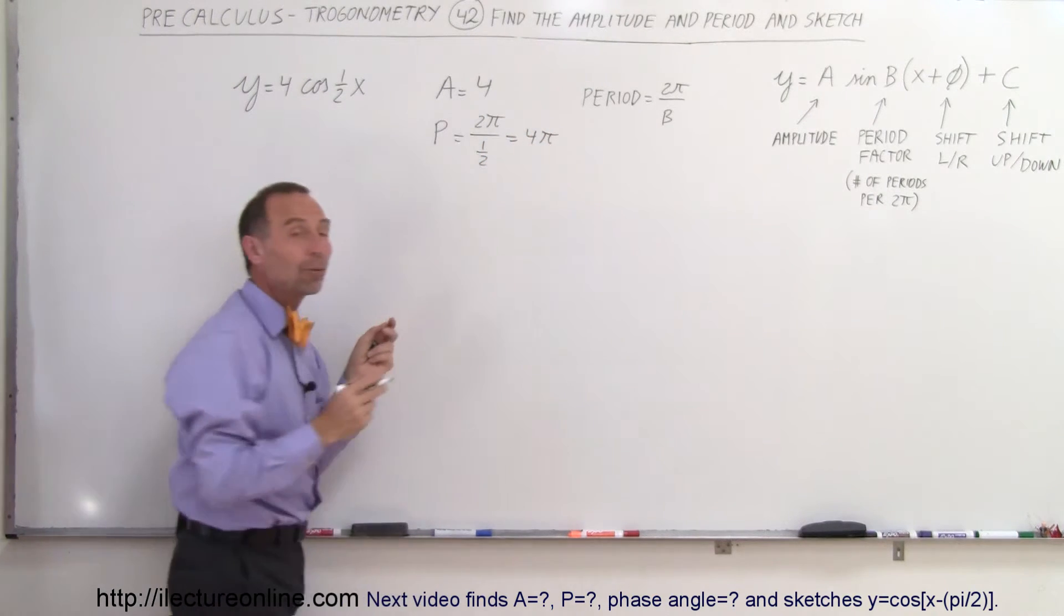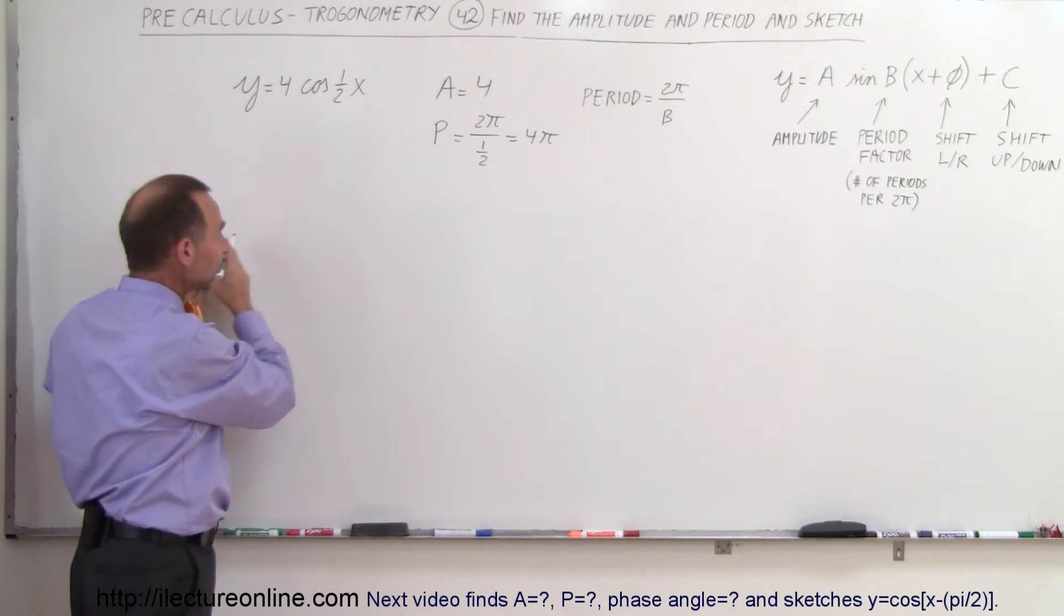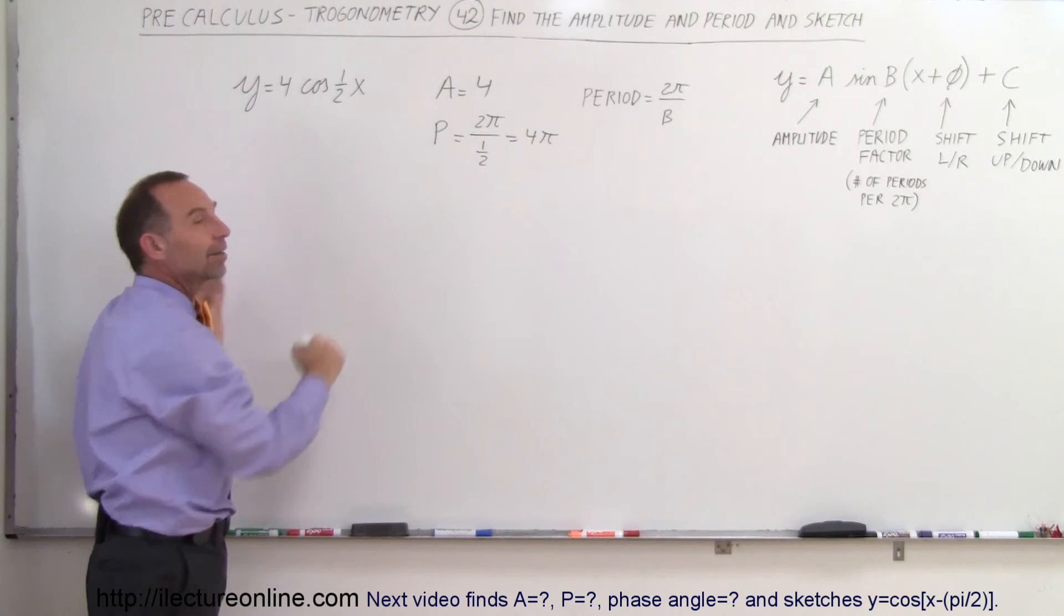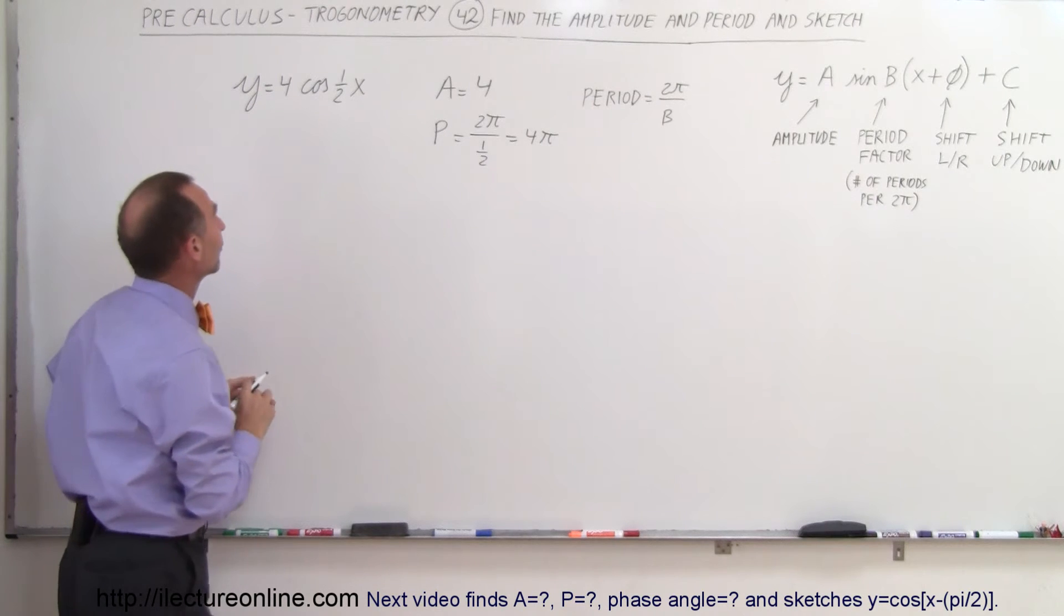So that means the period is 4 pi, that means we have to cover a distance on the x-axis of 4 pi to do one complete cycle of the wave or one complete cycle of the function.